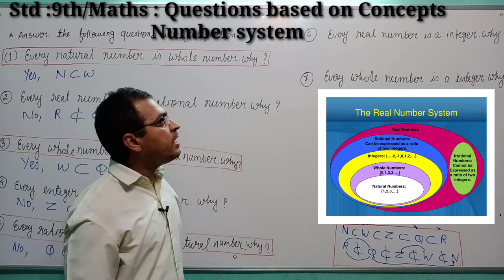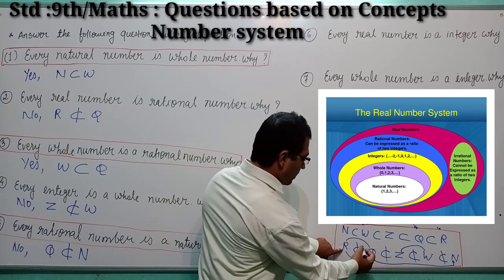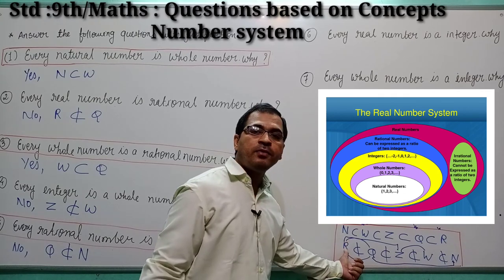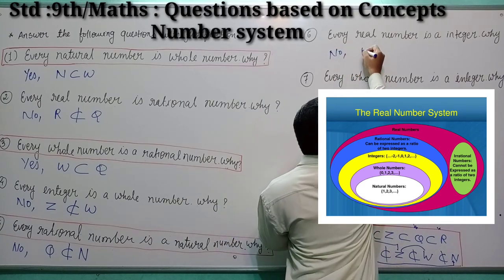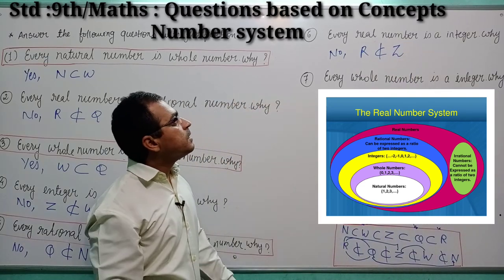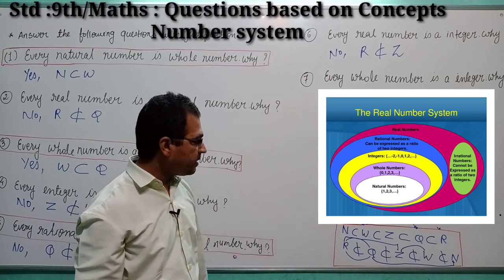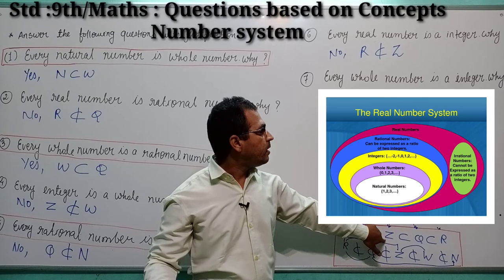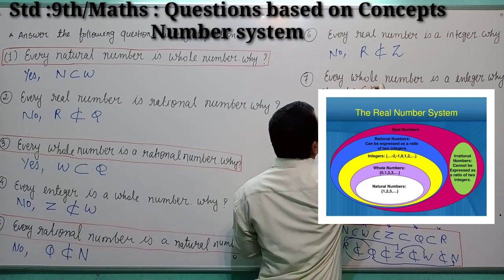Moving to question number 6: every real number is an integer. Is it possible? No — because integers do not include all elements of real number. So the answer is no, because real number does not include all elements of integers. Question 7: every whole number is an integer. Yes — because integers include all whole numbers: 0, 1, 2, 3, 4, 5. So yes, every whole number is an integer.